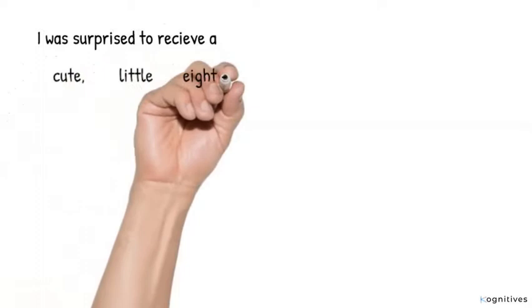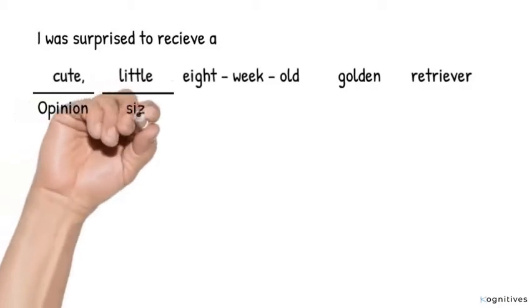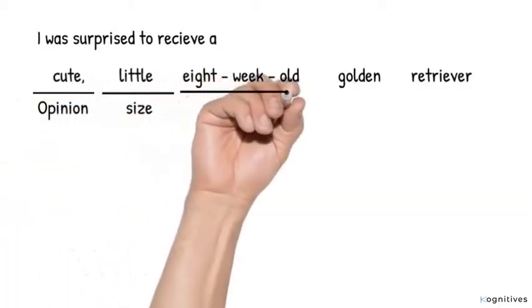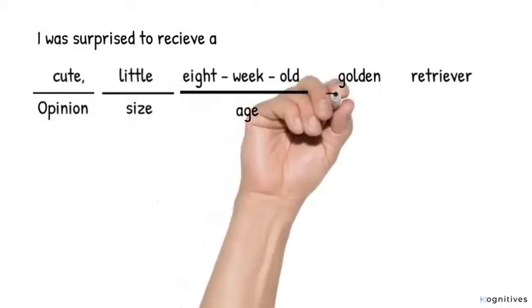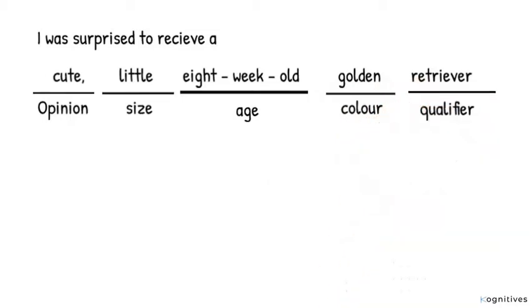Number four: I was surprised to receive a cute little eight-week-old golden retriever. Again, cute is opinion. Little is size. Eight-week-old is age. Golden is color. Retriever is the qualifier. I was surprised to receive a cute little eight-week-old golden retriever. It's properly ordered out.